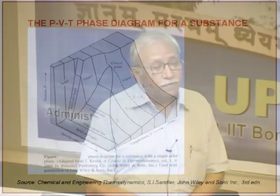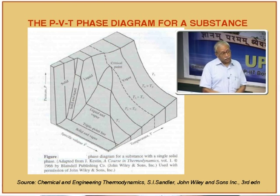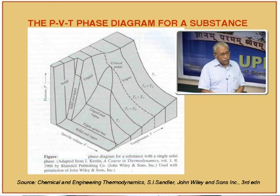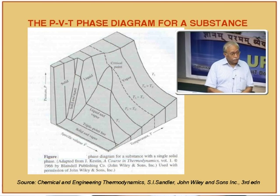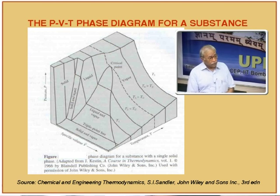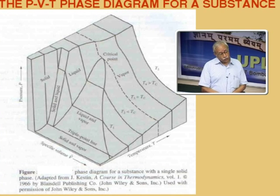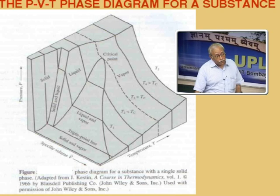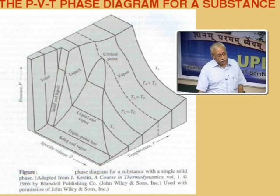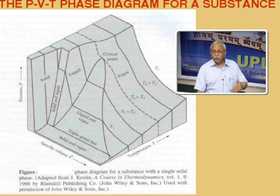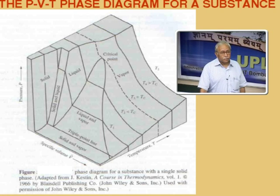I take you back to the very basic PVT phase diagram for a substance, shown here in 3D form. Three axes — pressure, volume, and temperature — have been plotted and our focus is on the surface of this object. Different regions are shown such as solid and vapor, with a dividing triple point line. Then the liquid and vapor zone, which when projected on a 2D plot takes the shape of a dome. It is a typical PVT diagram for a pure component.